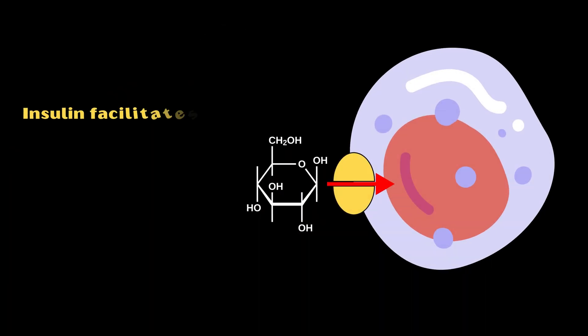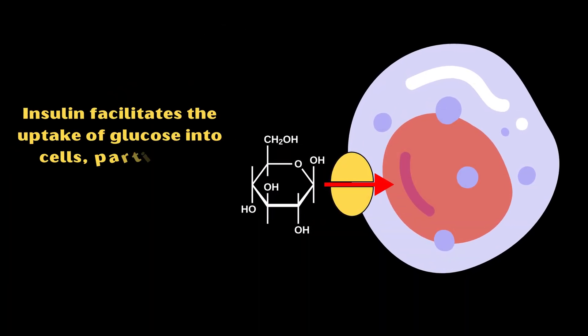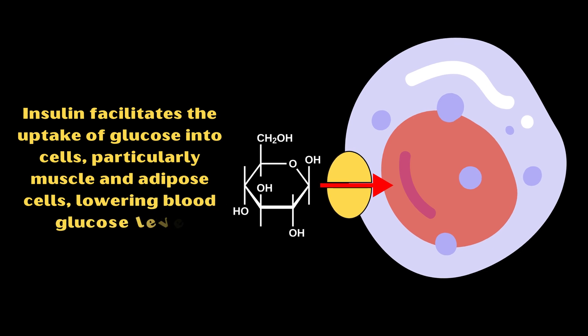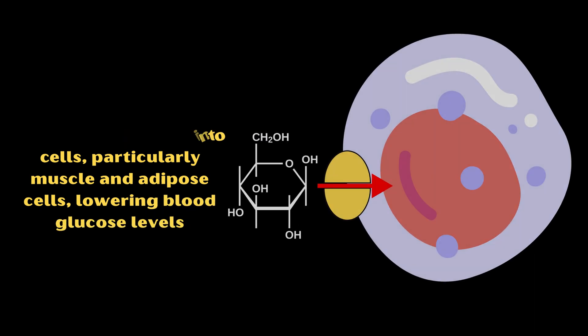Insulin facilitates the uptake of glucose into cells, particularly muscle and adipose cells, lowering blood glucose levels.